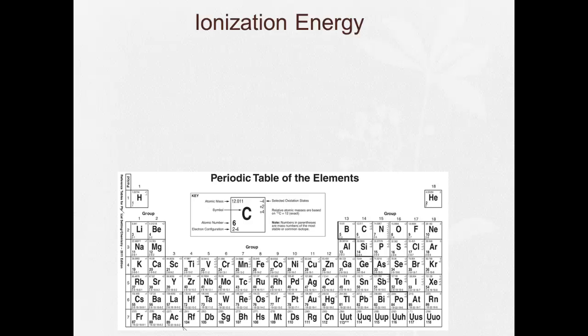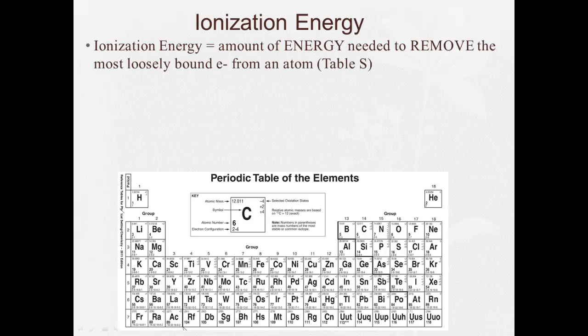Next trend we're going to talk about is ionization energy. Ionization energy is the amount of energy required to remove the most loosely bound electron from an atom. So we have here, let's take boron, that's got three valence electrons. To remove that electron, it takes energy, and that's called ionization energy.